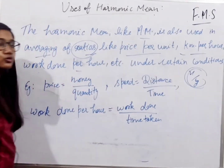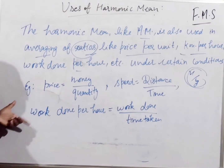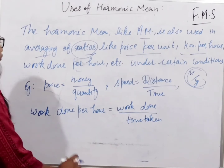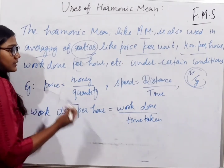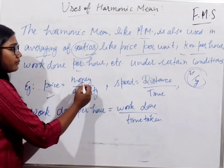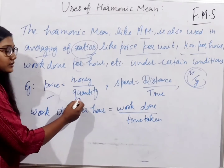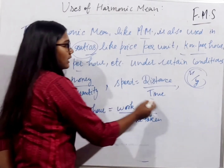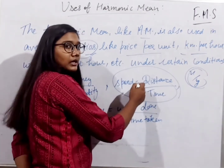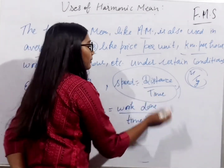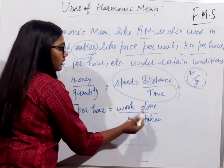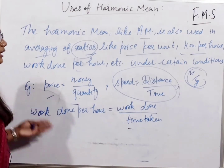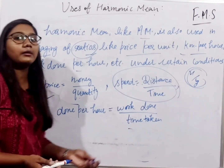Under certain conditions, we find the harmonic mean. For example: price equals total money divided by quantities — if more quantities are given. Similarly, speed as in the last video example, and work done divided by total time taken. These are the main cases where harmonic mean applies.